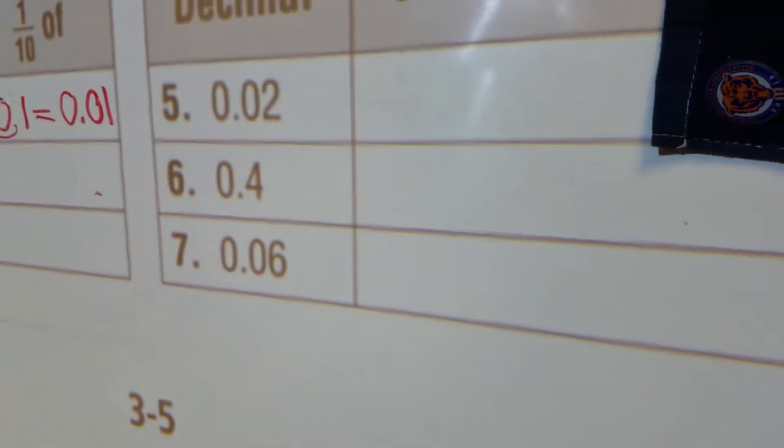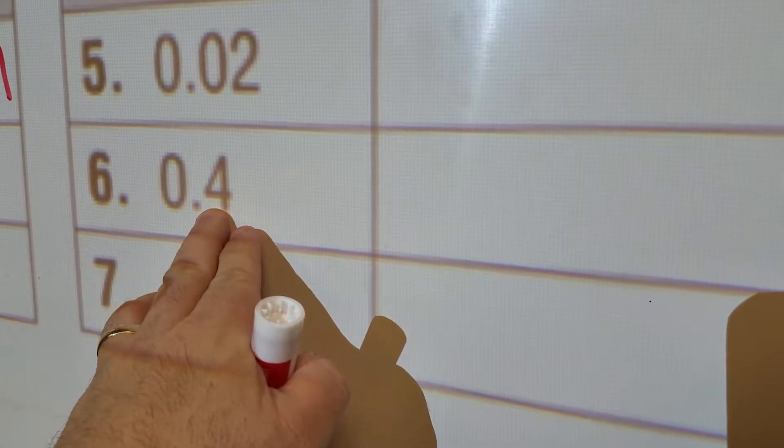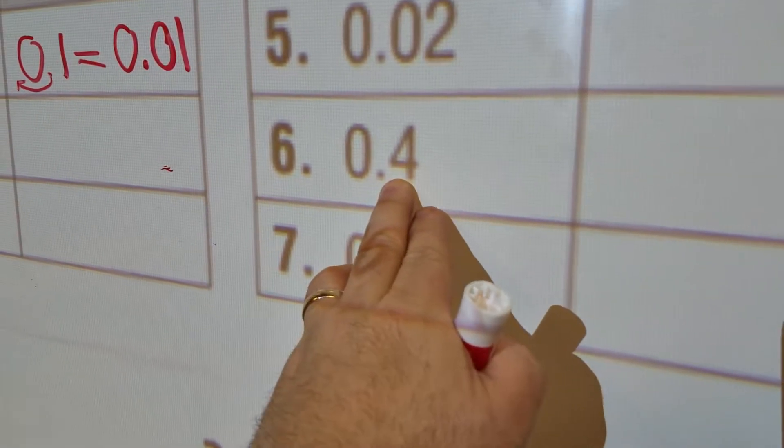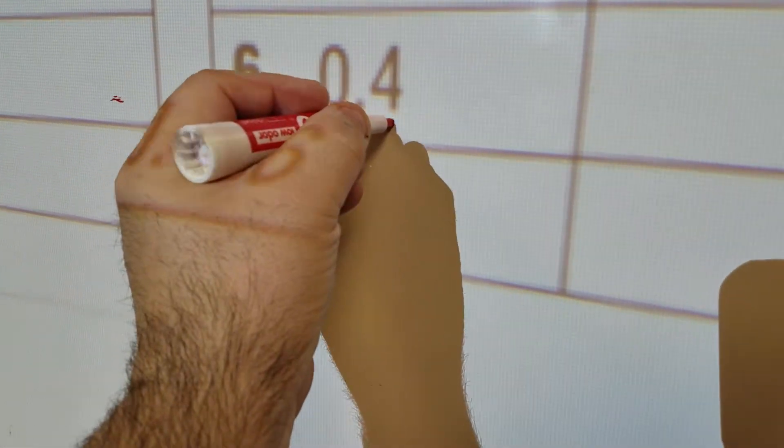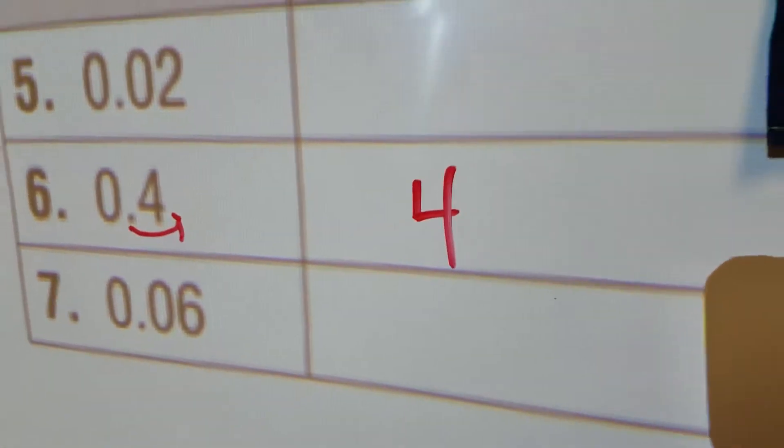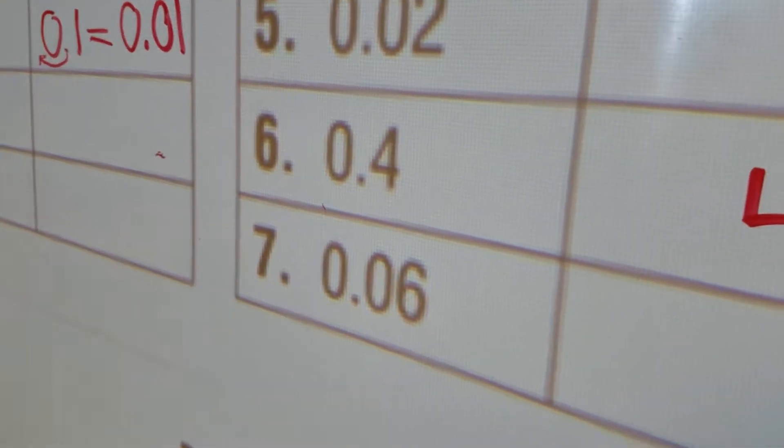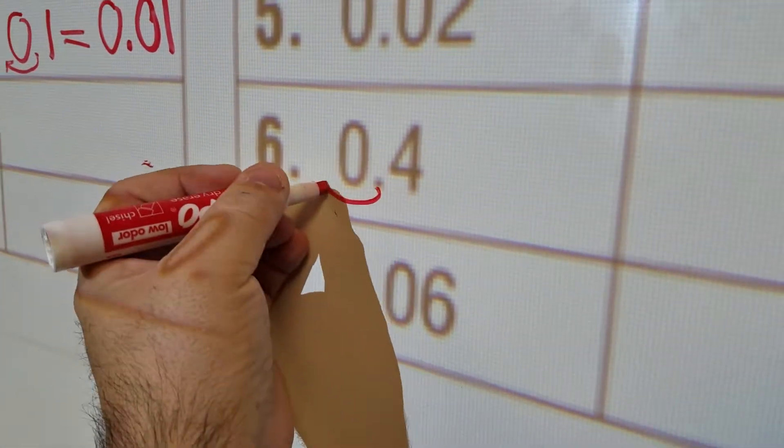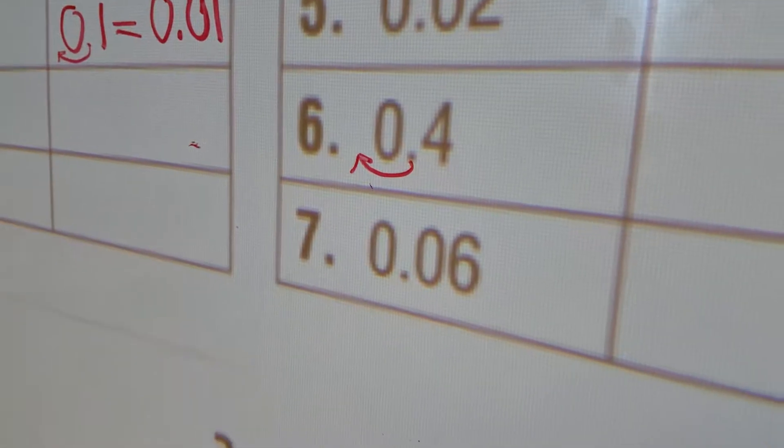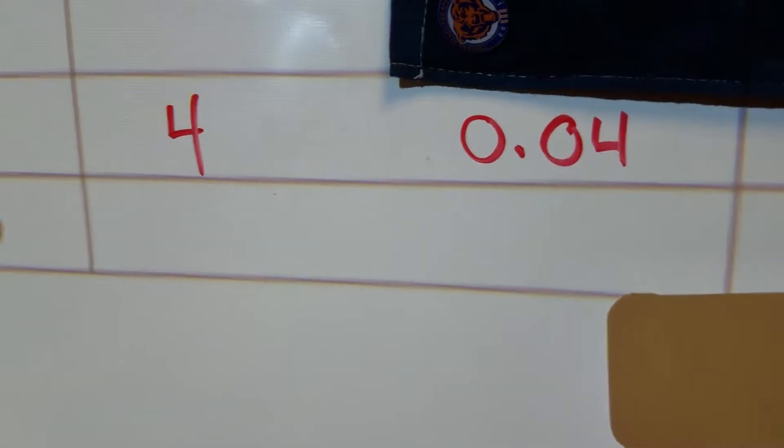Let's do another one. Let's do number 6. So what is 10 times as much as 4 tenths? I'm going to move this over here. 1 space to the right. And I got 4. Now, what if I'm doing 1 tenth of that? I move my decimal place one place over to the left. And I'm going to get 4 hundredths. 0 and 4 hundredths.